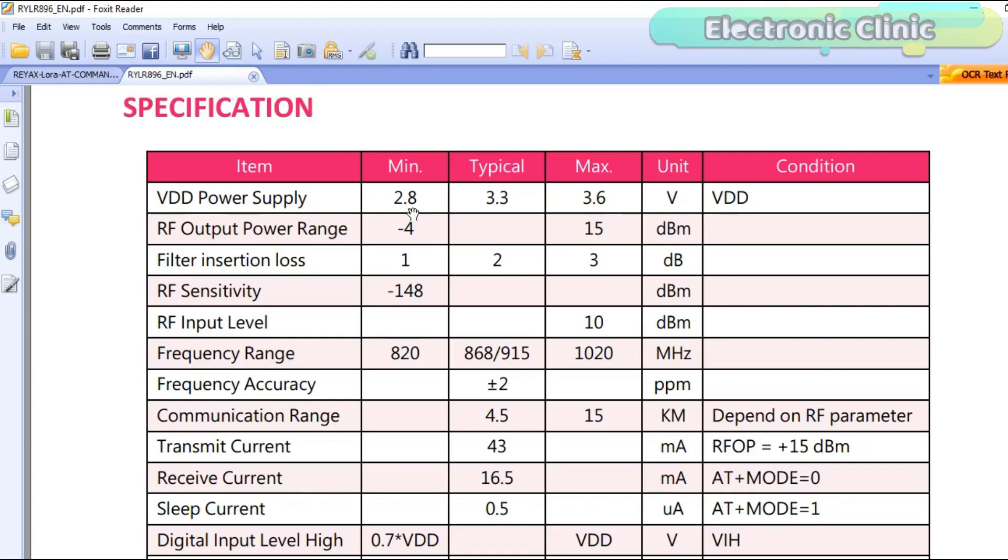The minimum voltage is 2.8 volts. The typical voltage is 3.3 volts and the maximum voltage is 3.6 volts. Using Arduino I can easily power up these transceiver modules using 3.3 volts.